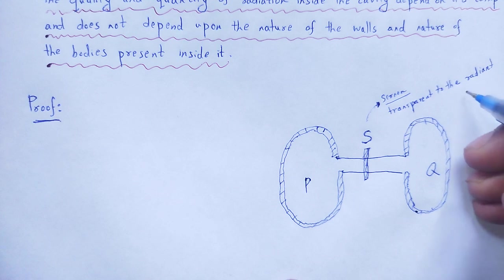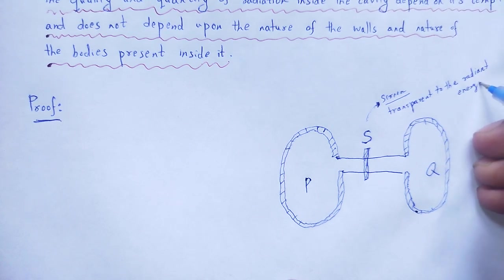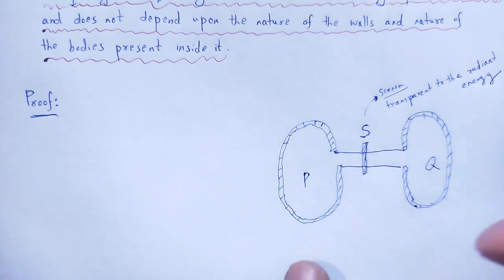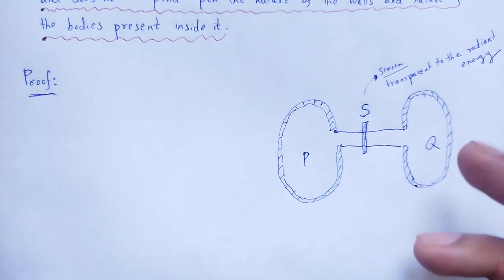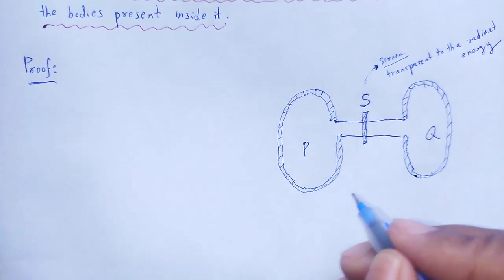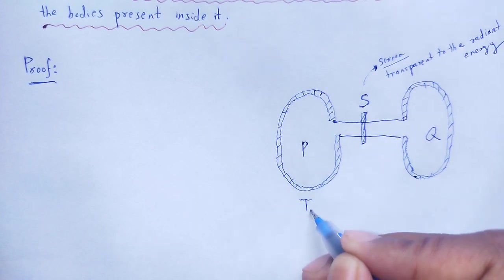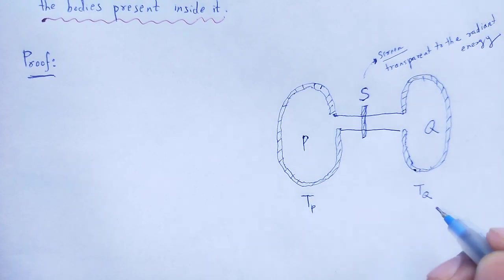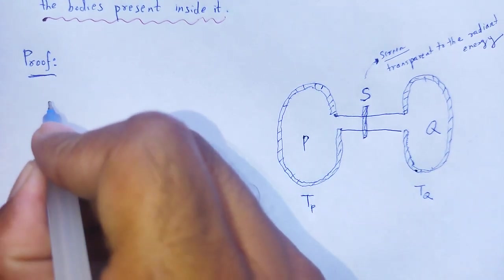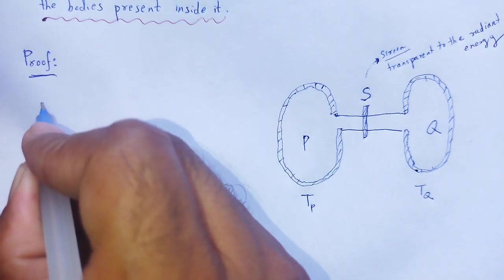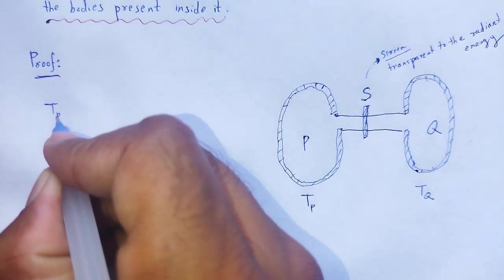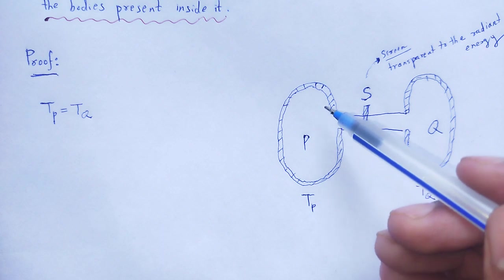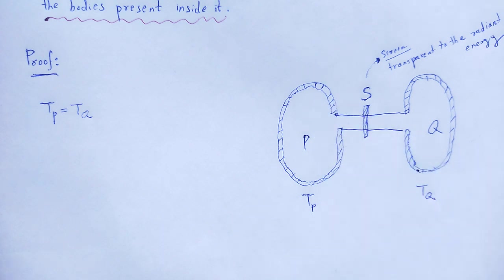Cavity P and cavity Q are made of different materials and initially these two are at the same temperature. Cavity P is at temperature T_P and cavity Q is at temperature T_Q. Cavity P is filled with radiant energy.